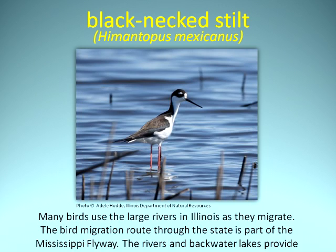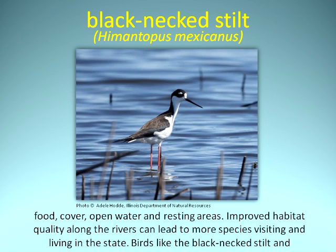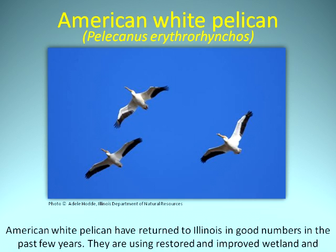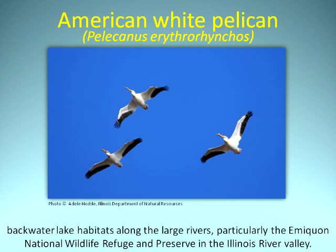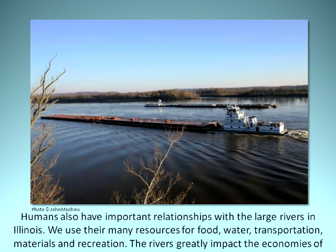Many birds use the large rivers in Illinois as they migrate. The bird migration route through the state is part of the Mississippi Flyway. The rivers and backwater lakes provide food, cover, open water, and resting areas. Improved habitat quality along the rivers can lead to more species visiting and living in the state. Birds like the black-necked stilt and American white pelican have returned to Illinois in good numbers in the past few years. They are using restored and improved wetland and backwater lake habitats along the large rivers, particularly the Emiquon National Wildlife Refuge and Preserve in the Illinois River Valley. Humans also have important relationships with the large rivers in Illinois. We use their many resources for food, water, transportation, materials, and recreation.